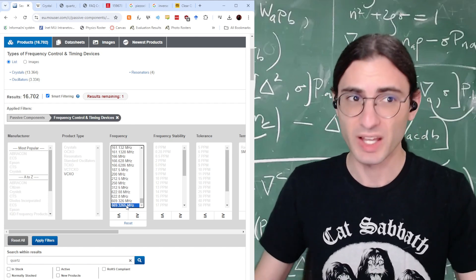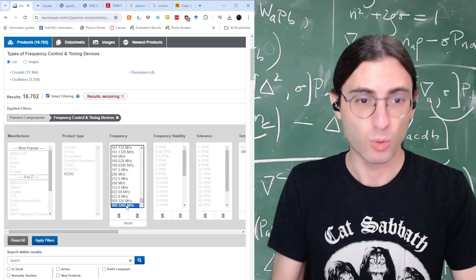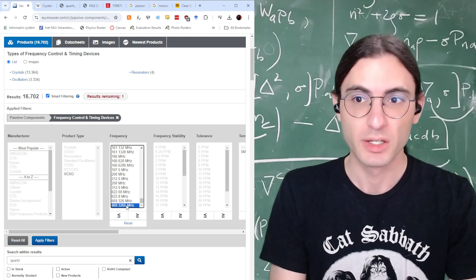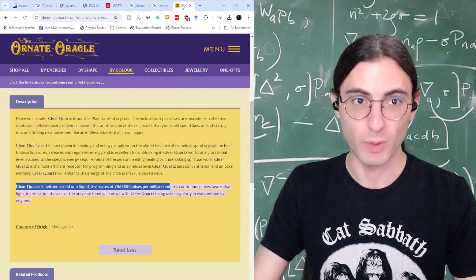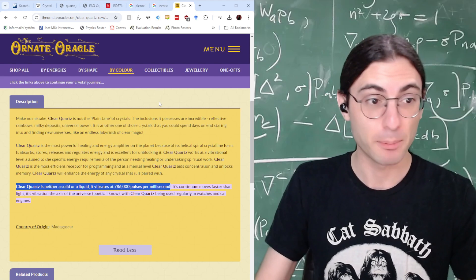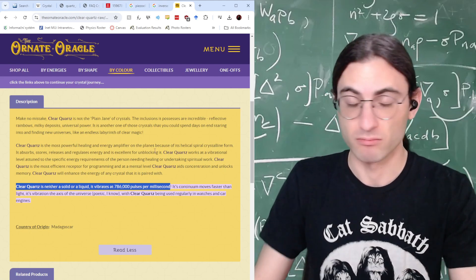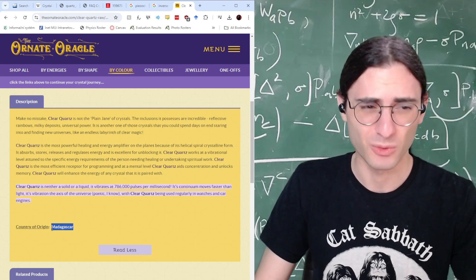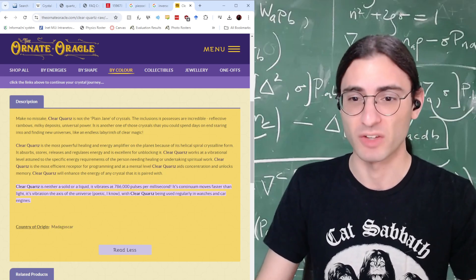So this claim seems false. Quartz doesn't have a natural resonant frequency anyway. It depends on the shape and the size of the cut of the quartz. So I'm not sure where this website found its claim, but it says it. Also, quartz doesn't originate from Madagascar. Quartz is found everywhere on the planet.